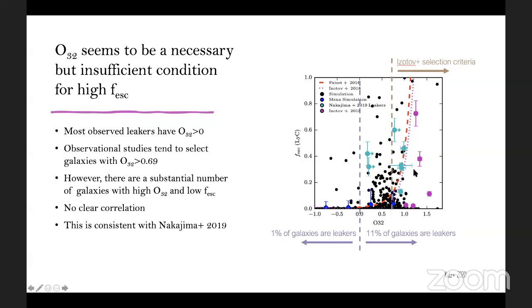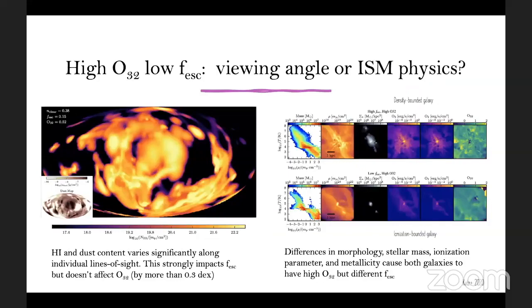You can compare this with observations shown in cyan and magenta and you can see that the regions where the leakers that we observe populate roughly are consistent with those from our simulations. Of course, we tend to find a number of galaxies in our simulations, the ones focused down here at the bottom, which have high O32 but very low f escape. So what we can take away from this is that O32 seems to be a necessary condition for Lyman continuum escape, but it's insufficient for high escape fractions. And one of the questions is, why can you have galaxies with high O32 but low f escape?